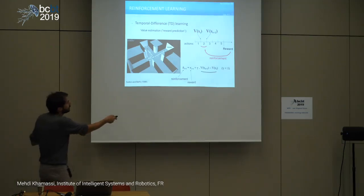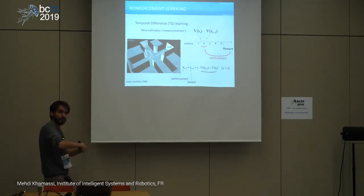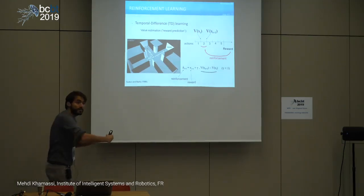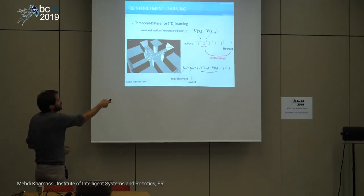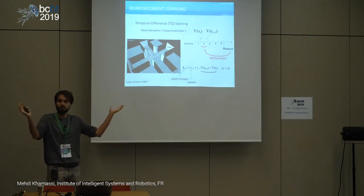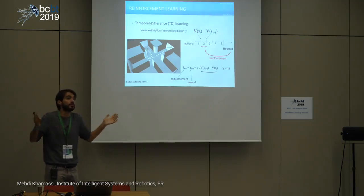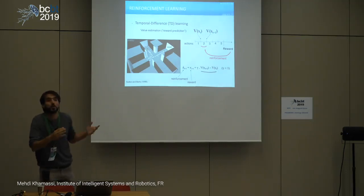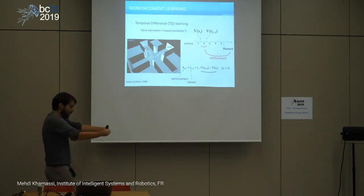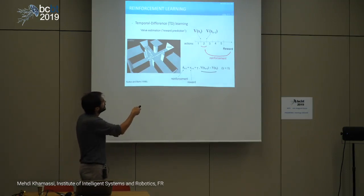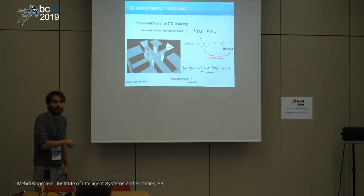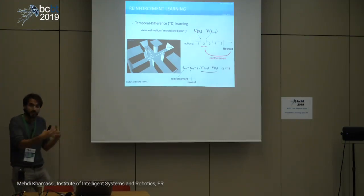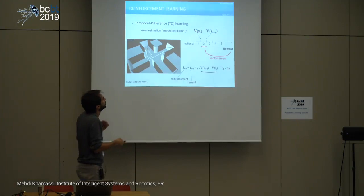Here comes temporal difference learning. The idea is to add a third term so that you do a reinforcement update after each action. Before doing a given action, you estimate the situation based on what you've learned. You do an action, get a new estimation at t+1, and the difference between two consecutive predictions of reward — a temporal difference — is part of your reinforcement signal.